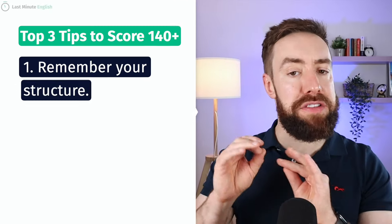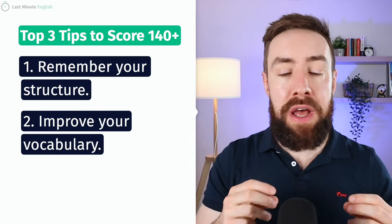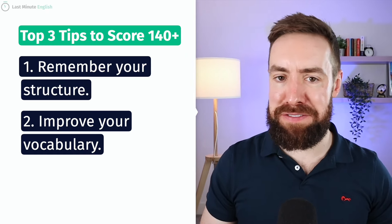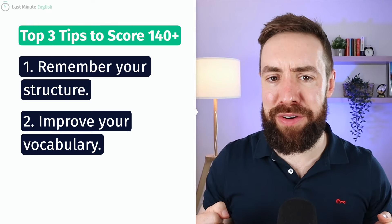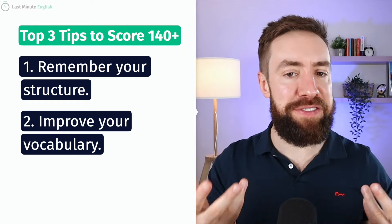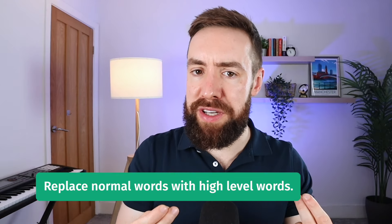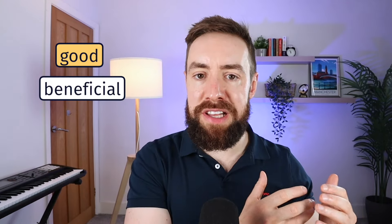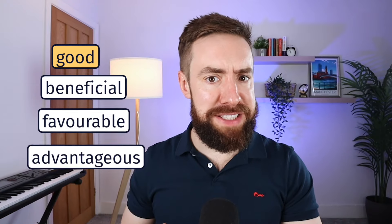We have to make sure we're using academic vocabulary, not just everyday vocabulary. Using everyday vocabulary is like cooking a curry without any spices — we want to add some flavor. The quickest way to improve your vocabulary is to replace normal words with higher-level words. For example, replace 'good' with 'beneficial,' 'favorable,' or 'advantageous.' Instead of 'bad,' say 'negative,' 'detrimental,' or 'harmful.'